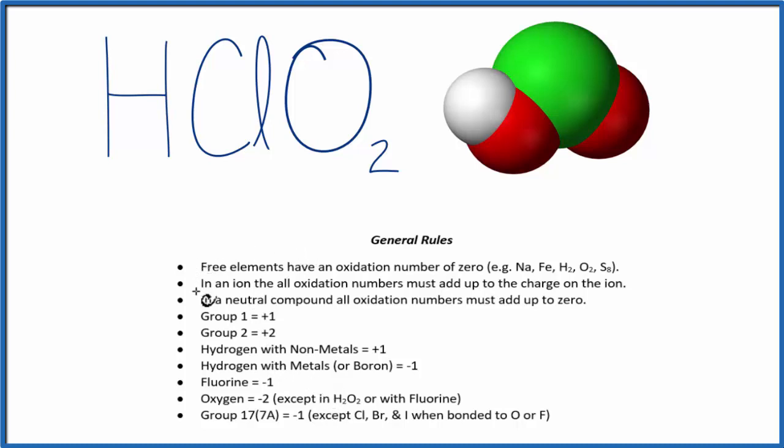Looking down the rules, we can see hydrogen, when it's with a non-metal, and the oxygen here that the hydrogen is bonded to, that's a non-metal. So that's going to be plus one. Oxygen is almost always minus two, with a few exceptions. So each one of these oxygens is going to be a minus two.